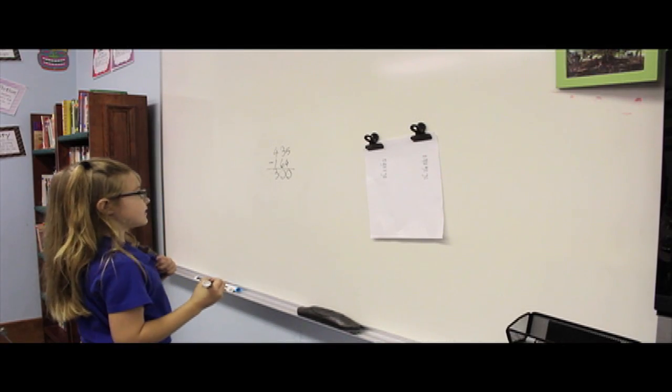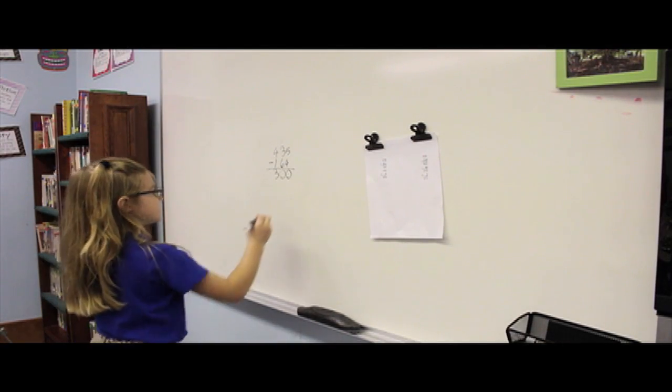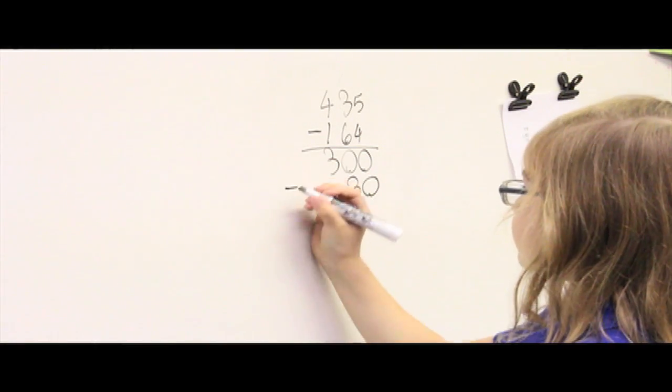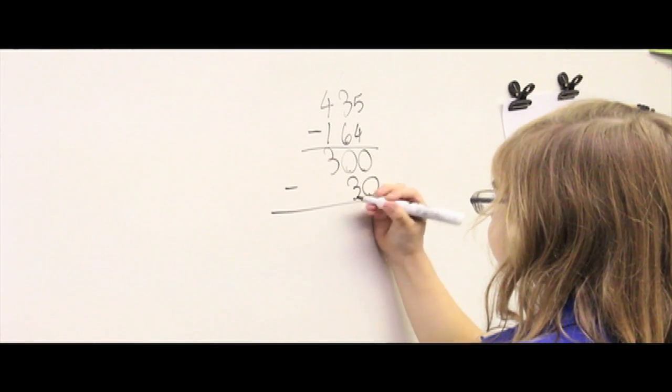I have 3 tens, I owe 6 tens, I still owe 3 tens, value 30. Mental math, 270.